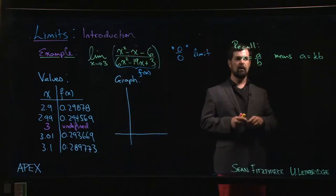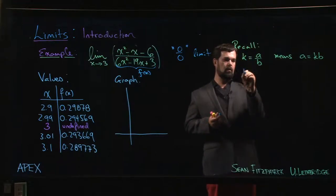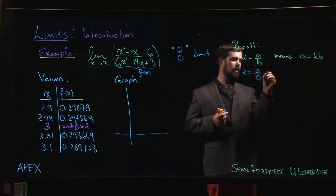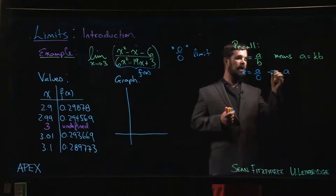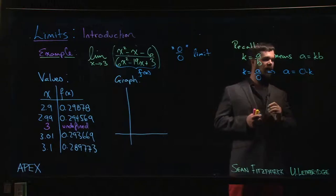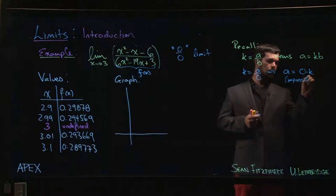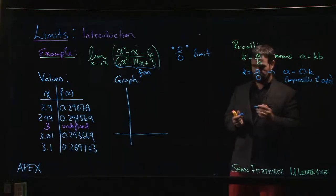But if you tried zero over zero, or even if it's a number over zero, if I did a over zero, well that would mean that a is zero times k. This is impossible if a is not zero, because zero times anything gives you zero.